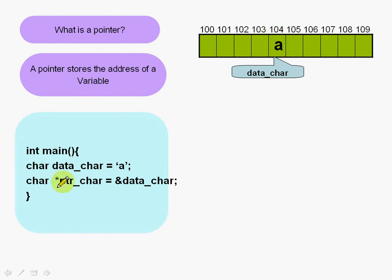We have declared a pointer char *ptr_char and we have initialized it with the address of the character variable. The ampersand operator is known as the address operator, and this statement assigns the address of the character variable to the character pointer ptr_char.